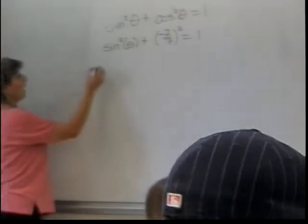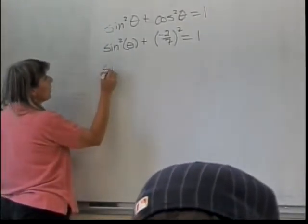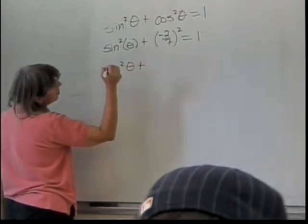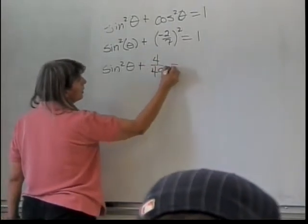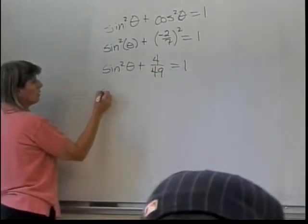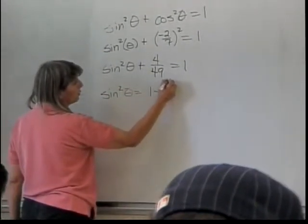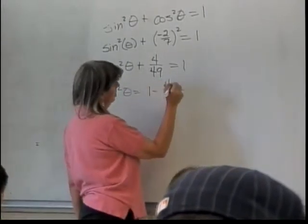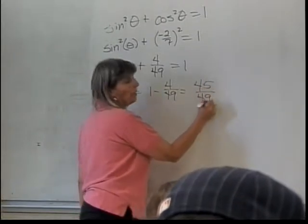Alright, so I can solve this. Helps if I write what's next. Sine squared of theta plus 4 over 49 equals 1. So sine squared of theta is equal to 1 minus 4 over 49 which is 45 over 49. Everybody okay with that so far?